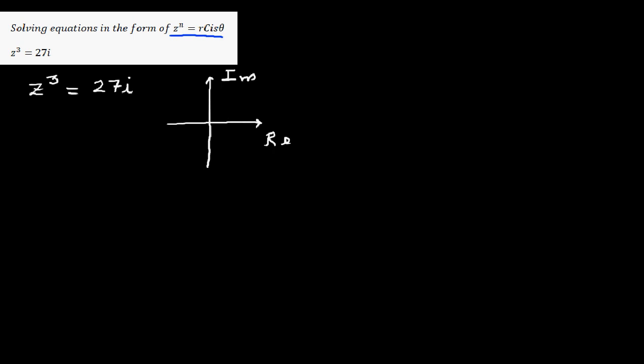Z cubed is equal to 27i. Whenever you have a question like this, the first thing we need to do is write this in polar form. Let's graph this so that you understand the polar form quite easily. 27i means this is the real arm and this is the imaginary arm — a point on the imaginary arm at a distance of 27. The real part is 0 and the imaginary part is 27. This is the rectangular form.